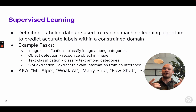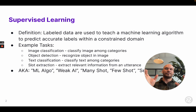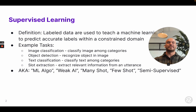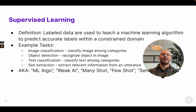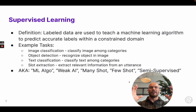Supervised learning is also known as an ML algorithm, or perhaps weak AI. Sometimes you'll see the words many-shot or few-shot, meaning that many or few shots of data are shown to the algorithm. And lastly, semi-supervised, which is similar to few-shot where a few examples are shown. In my mind, these all kind of fall under the same category of supervised learning.